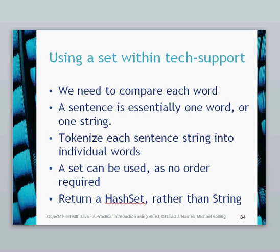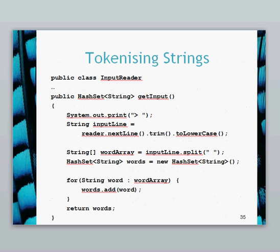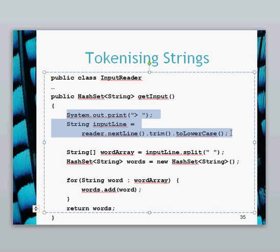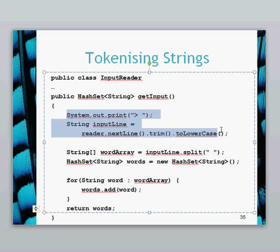To do this and to store these individual words, we don't need any ordering since we're just comparing them, so a set can be used to store the words. Previously when we got input from the user we returned a String, but now we're going to return a HashSet which has a set of these strings that we can compare later. Here is our new InputReader class. Everything is the same except the getInput method has changed. The first thing that's changed is the return type — it's now HashSet of type String, whereas previously it was String. All the cursor placement and getting input from the user using reader.nextLine, which is a Scanner class, you should recognise and be comfortable with.